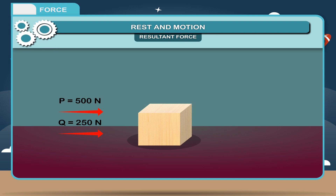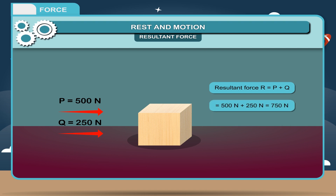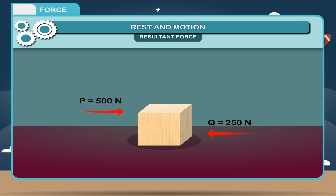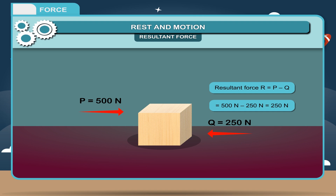When two forces are acting in the same direction, their resultant force is obtained by adding the two forces. When two forces are acting in opposite directions, their resultant force is the difference of the two forces. For example, resultant force R = P − Q = 500 Newton − 250 Newton = 250 Newton.